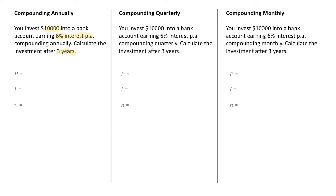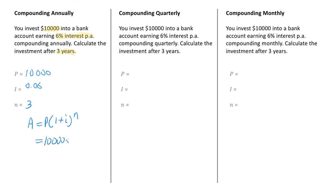I like to start by working out what my P, I, and N values are going to be. My principal P is $10,000. My interest rate is 6%, which as a decimal is 0.06. Because it's compounding annually, I don't need to make any adjustments, so it stays at 0.06. The number of times it's compounding is three — it compounds three times, once at the end of each year. So I can now write the formula: A equals P times 1 plus I to the power of N, and substitute in my values: 10,000 times 1 plus 0.06, to the power of 3.